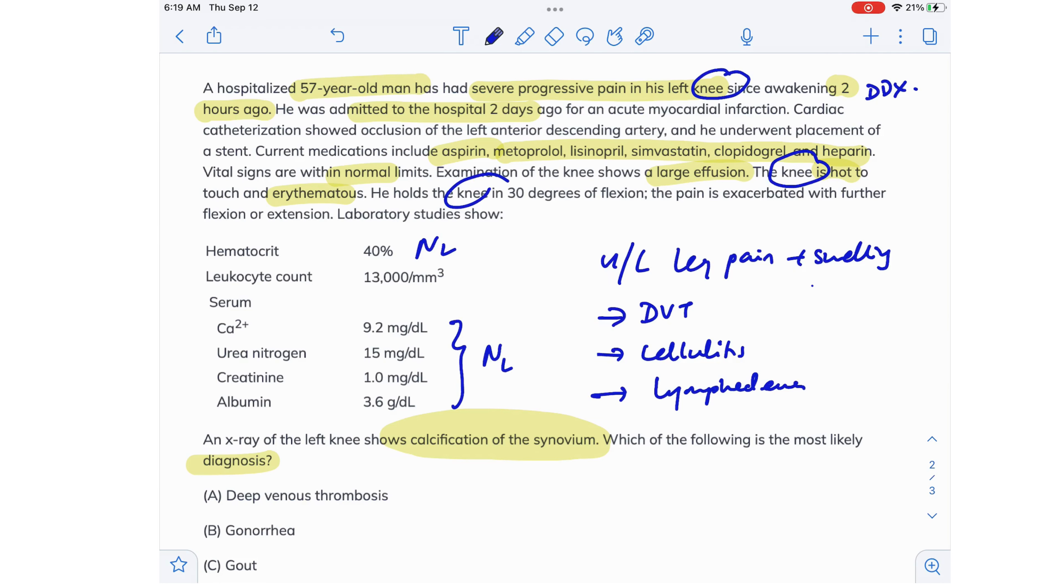So when you read the first two lines of this question, if you read it really fast, it was like 'hospitalized 57-year-old man has had severe progressive pain in his leg since awakening two hours ago, he was admitted to the hospital two days ago for an acute MI,' it sounds like a DVT, right? But the important thing you need to note here is that it is left knee pain, it's not left leg pain. Okay, now let's try to rule out the other answer options.